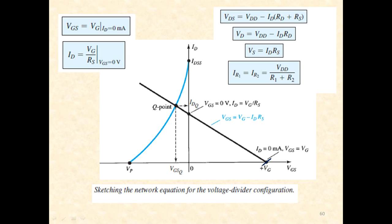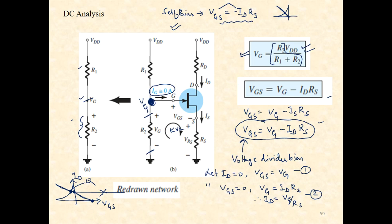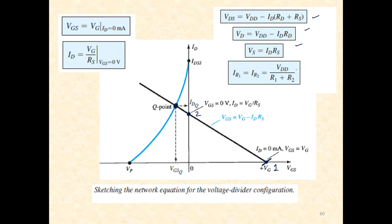On the graph, the first point is when ID is zero and the second point is when VGS is zero. Joining and extending the line through the transfer curve gives the Q point. Expressions for VDS, VD, and VS can similarly be obtained. IR1 equals IR2 equals VDD/(R1 plus R2) because IG is zero and the same current flows through the R1-R2 branch.